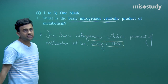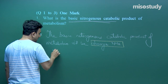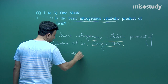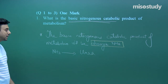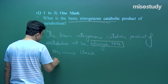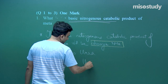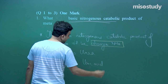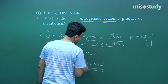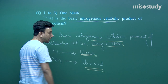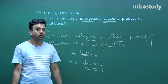Since ammonia is highly soluble in water, ammonia sometimes gets converted into urea — these will be ureotelic animals. Ammonia sometimes gets converted into uric acid — these will be called uricotelic animals. For example, reptiles, birds, and insects are uricotelic.